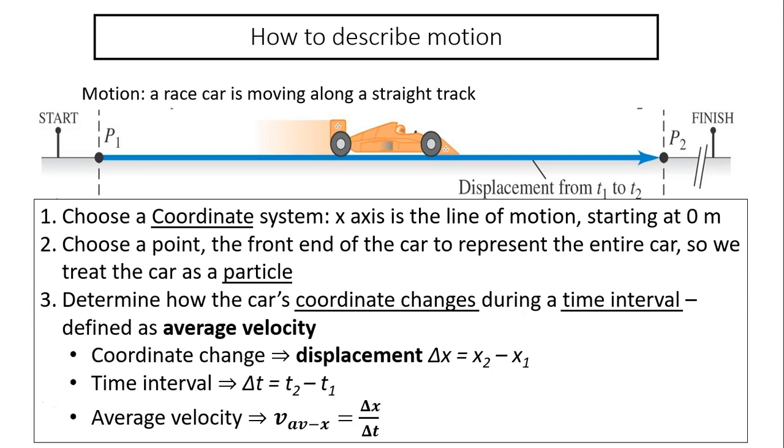How to describe motion. Here is a motion, a race car is moving along a straight track. To describe this motion, we need to choose a coordinate system. So we choose the x-axis is the line of motion starting from 0 meters. Next, you have to choose the point of the car. So we choose the front end of the car to represent the entire car. So we treat the car as a particle.